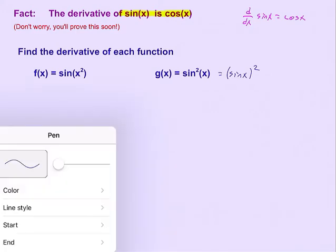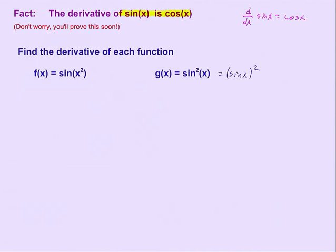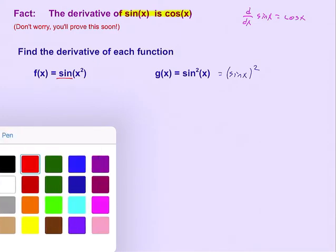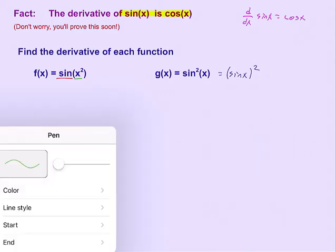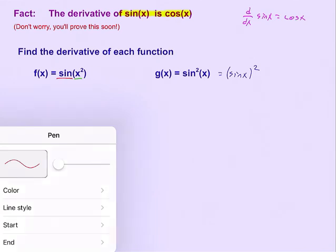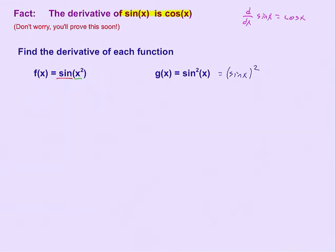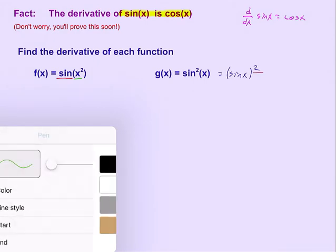What I want you to do is to be able to highlight the inside function versus the outside function. So in this case, the outside function is the sine. The inside function is the x squared. It's the other way around in the other, in the g of x. In that case, the outside function, what happens first, is the squared. And the inside function is the sine of x.